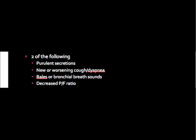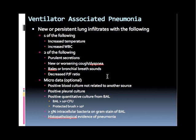Two of the following are also required: purulent secretions — the nurse said there's a slight change in the type of secretions; worsening cough or dyspnea, which is very difficult to tell on an intubated patient; rales or bronchial breath sounds, which are already quite abnormal to begin with; and decreased PF ratio, which hasn't really changed very much. So in this kind of patient, we're a little unclear whether or not they really do have two of that category, though many would say there's a good chance they have VAP. However, we know there are multiple other reasons for this kind of change in their clinical scenario.